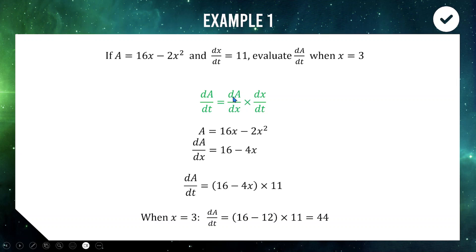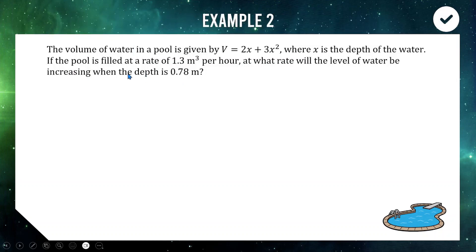This is the kind of stuff we're doing today — finding derivatives by splitting them apart and introducing a third variable, which is a related rate of change. Here's our first application question: the volume of water in a pool is given by V = 2x + 3x², where x is the depth of the water. The pool is filled at a rate of 1.3 cubic metres per hour — that's the rate of change of volume.